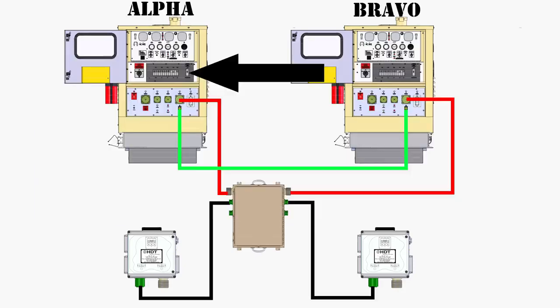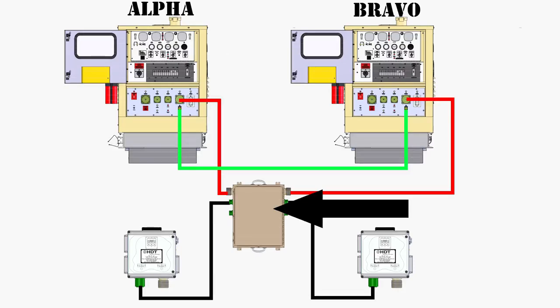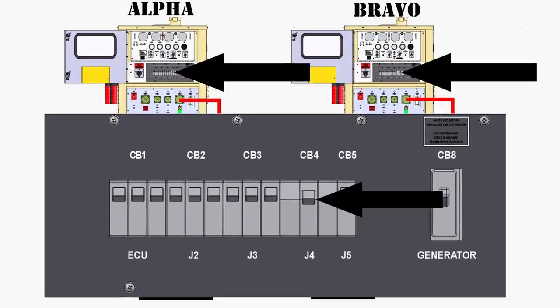Turn on circuit breaker 8 on Alpha and turn on the circuit breakers on the PDU. Turn on circuit breaker 4 on both DEGs.